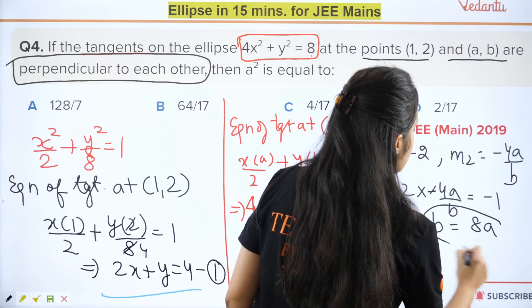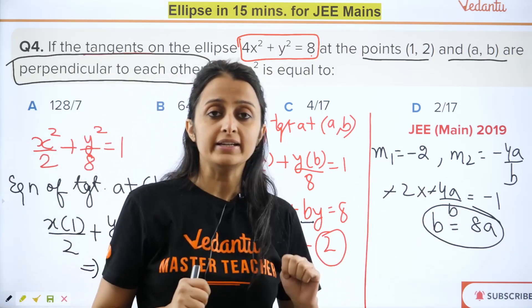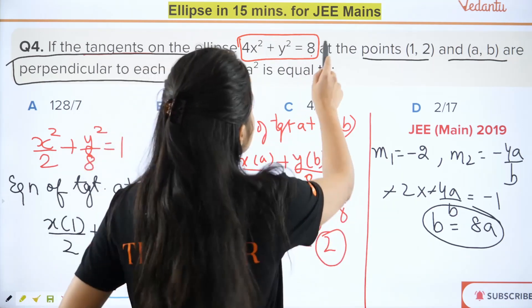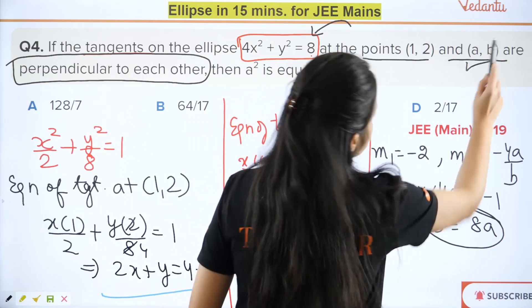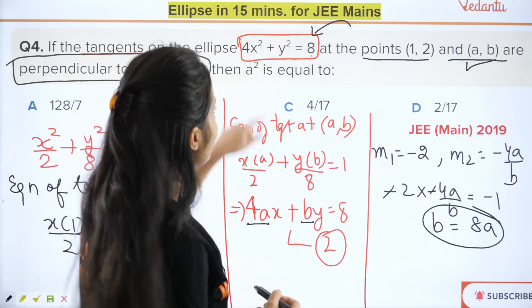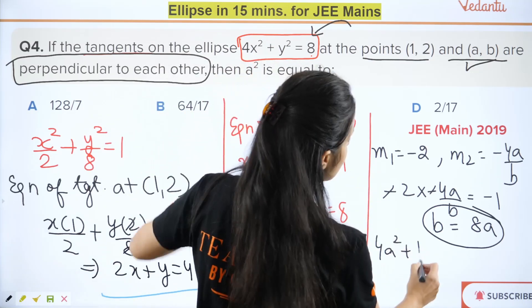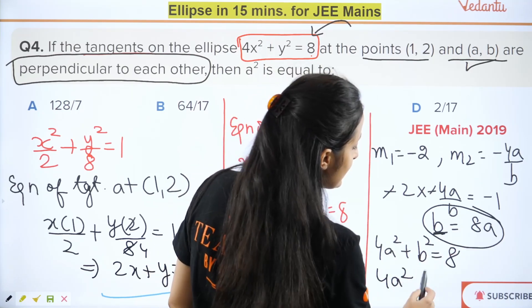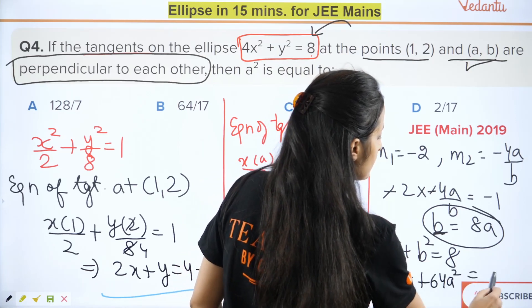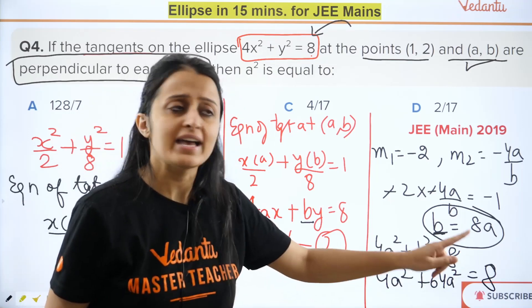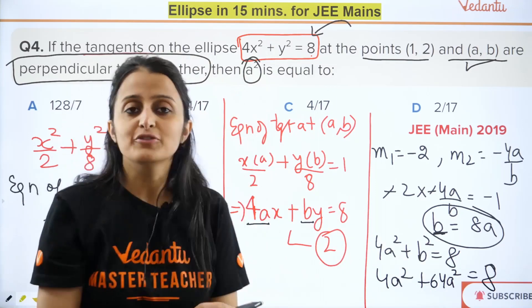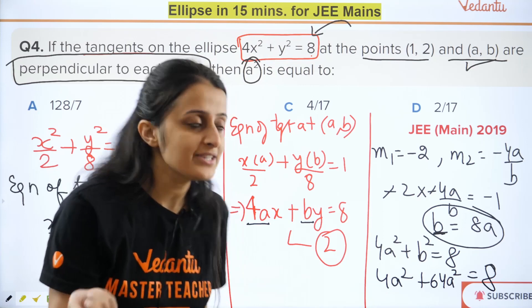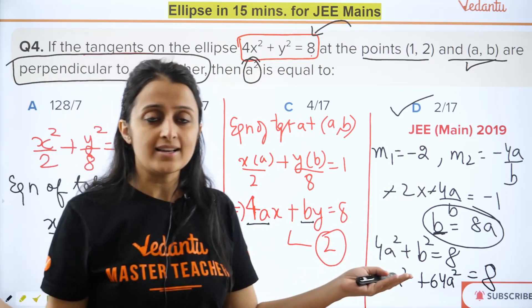Since the tangents are perpendicular, m₁ × m₂ = −1, giving b = 8a. Also, since (a, b) lies on the ellipse, 4a² + b² = 8. Substituting b = 8a gives b = 8a², so converting everything in terms of a²: 68a² = 8, therefore a² = 2/17. That's the final answer.